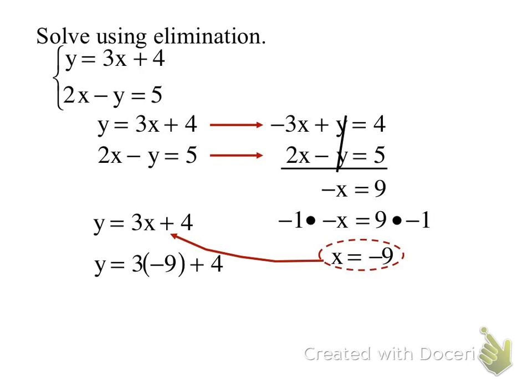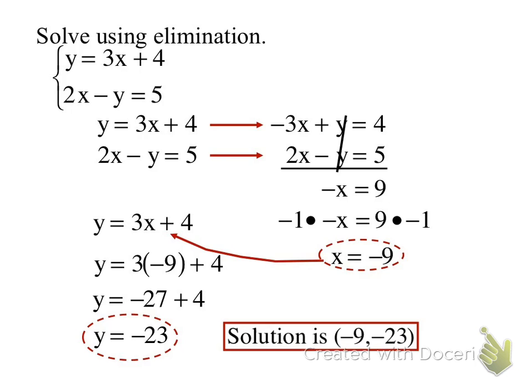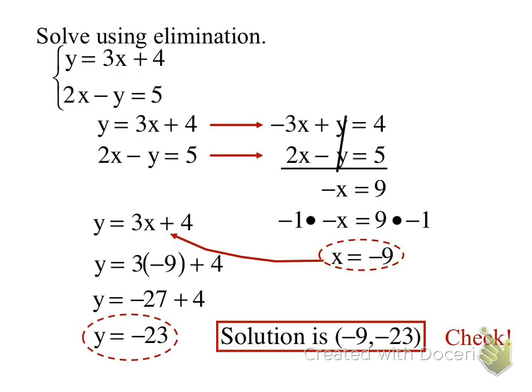In this case, y is already alone so that's going to be easier. 3 times negative 9 plus 4 is negative 23, and my ordered pair, my solution to the system is negative 9 comma negative 23. And we should be plugging that back in to check our work mentally.